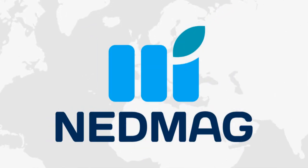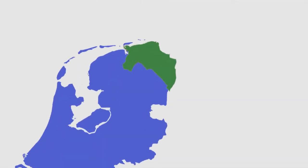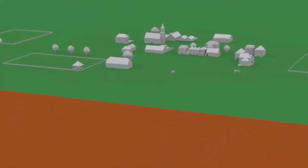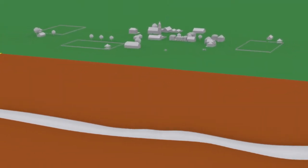One and a half kilometers beneath the land of Groningen, Nedmach is extracting the purest magnesium salt in the world. This salt can be found in a layer that is 250 million years old.